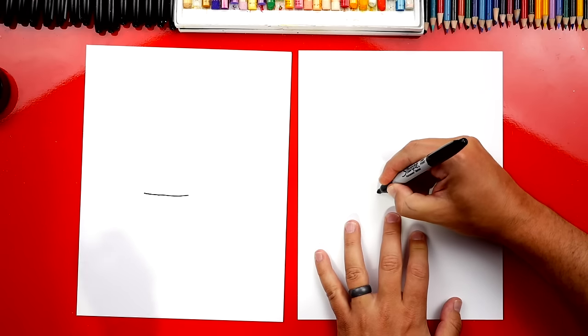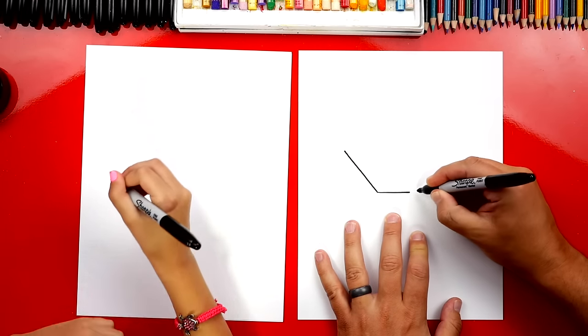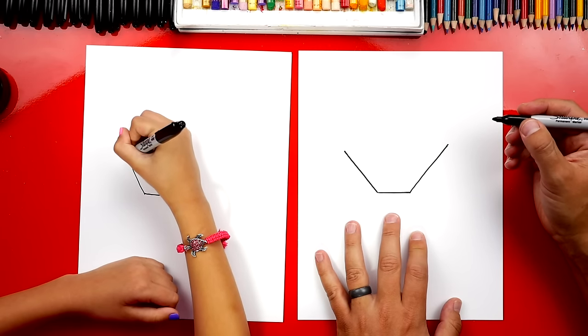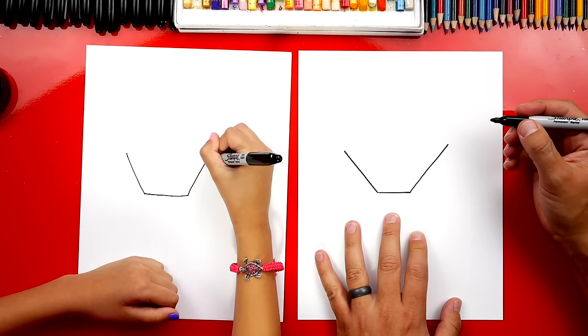Now we're going to draw a diagonal line that comes up on both sides. Yeah, that matches. Same height. Good.